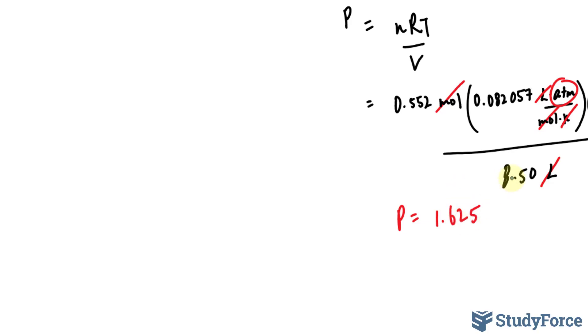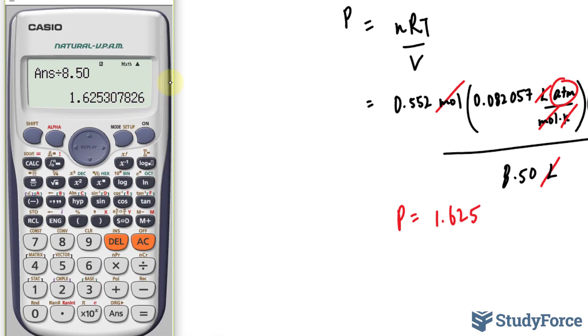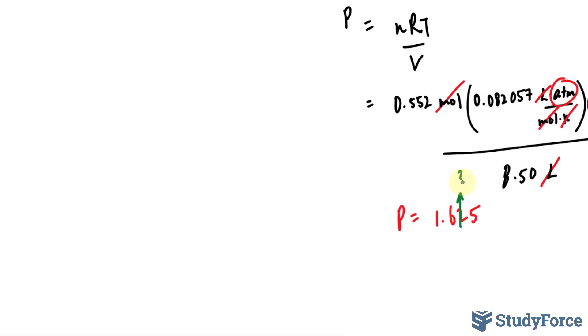Everything after this 2 is insignificant, but it's followed by this 5, and this 5 is followed by other numbers. So even though this is an even number, we're going to push this number up to 3. 1.63 atmospheres.